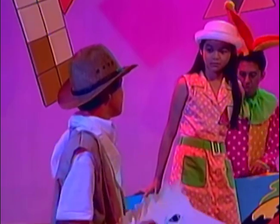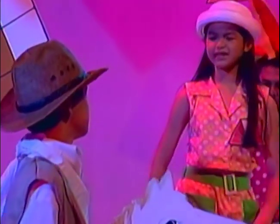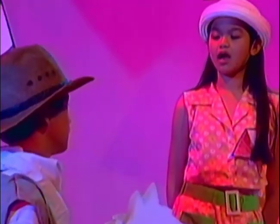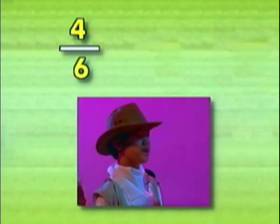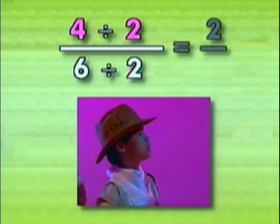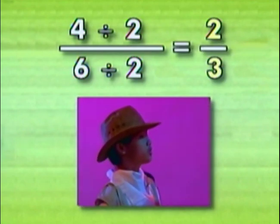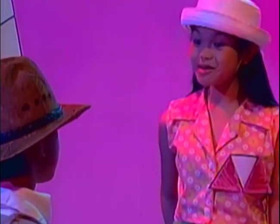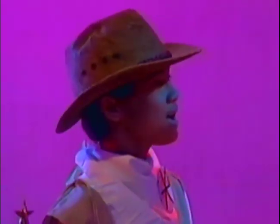Excuse me, ikaw yata ang partner ko. Bakit? Ano bang design ng damit mo? Ah, 4/6. Eh, di ba ang 4 at 6 ay pwede pang i-divide sa 2? Eh, 4 divided by 2 is 2. 6 divided by 2 is 3. 2/3 na ang lowest term ng 4/6. Tama nga, magka-partner tayo. Kunin natin yung bremyo natin. O, tara na.